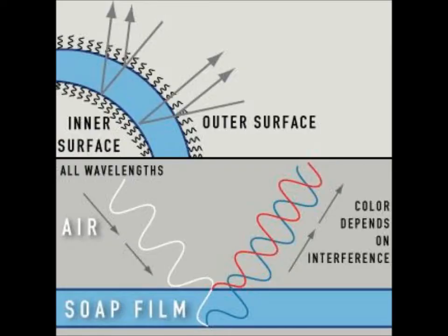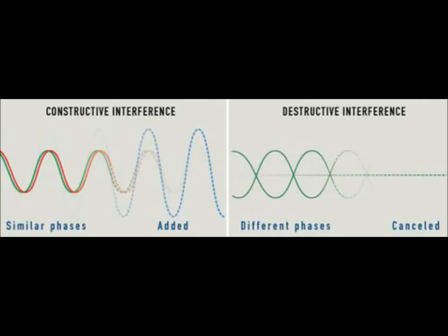Soap bubbles are colored because light is reflected from both the inner and outer surface of the bubble. When an incoming light ray strikes the outer surface of the bubble, part of the ray is reflected, and the other part is transmitted to the inner surface of the soap film. It is then reflected back towards the outer surface in a direction parallel to that of the first reflected ray. Because the distances the light rays travel are different depending on the angle of the incident light and the thickness of the film, some wavelengths will interfere constructively and others destructively.